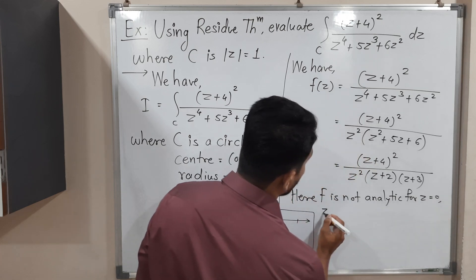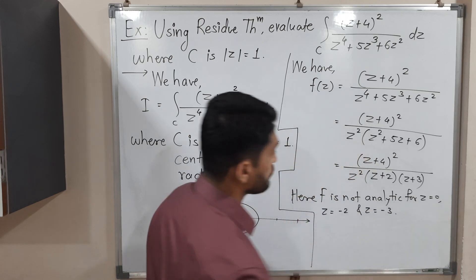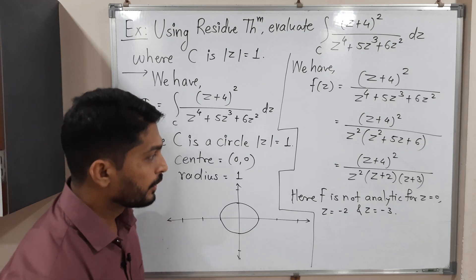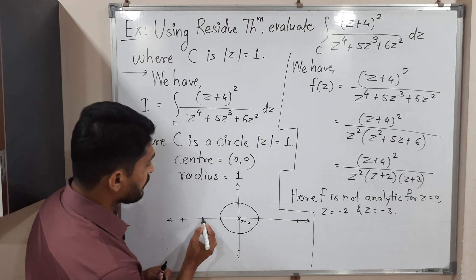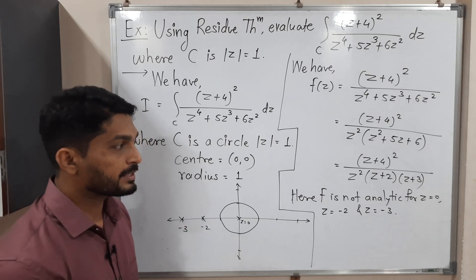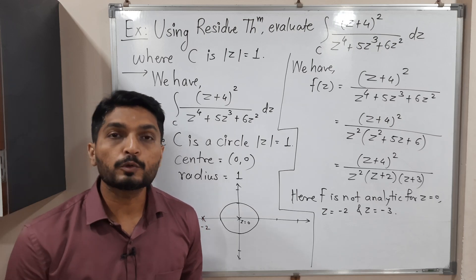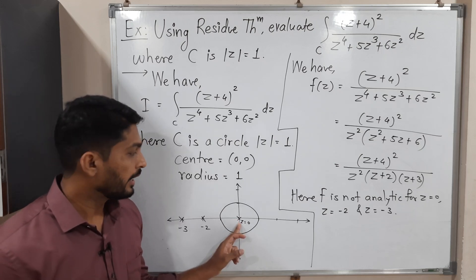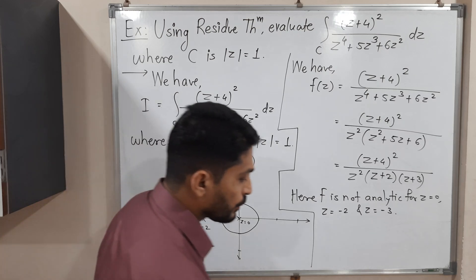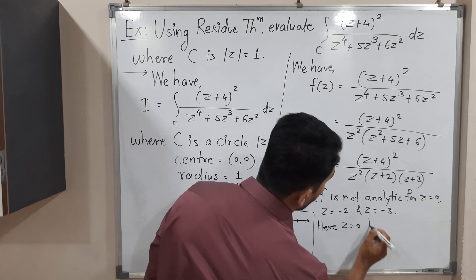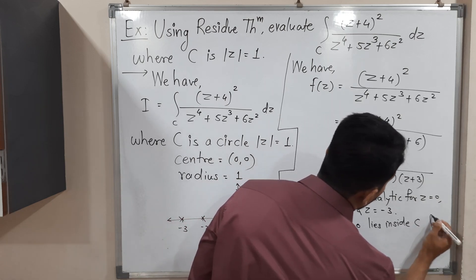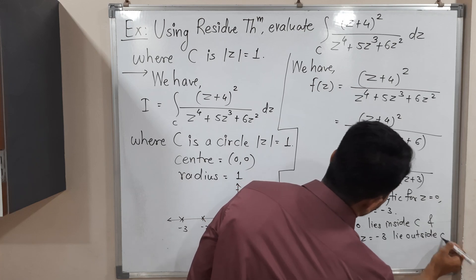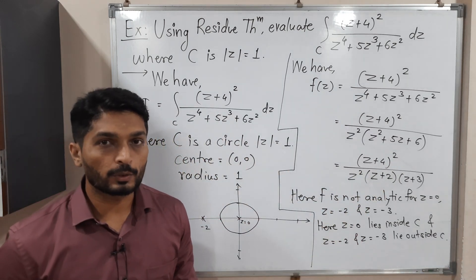Now we check whether those points lie inside or outside C. z = 0 lies at the origin, which is inside C. z = −2 and z = −3 lie outside C since the circle has radius 1. So out of the three singular points, only z = 0 lies inside C. We only need to find the residue at z = 0.